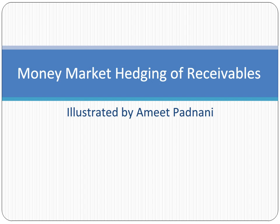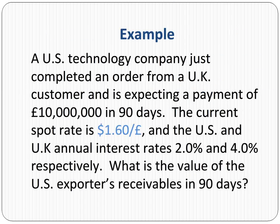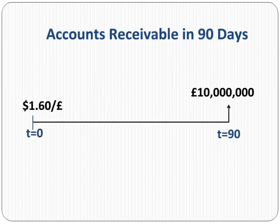Welcome to money market hedging of receivables. Money market hedging is a technique that can be used for currency hedging, in addition to forwards, futures, and options. The primary objective of using money market hedging is to lock the existing spot rate. Let's take a look at an example of a US exporter looking to hedge 10 million pounds to be received in 90 days from a British customer. The annualized US interest rate is assumed to be 2% and the UK interest rate is assumed to be 4%.